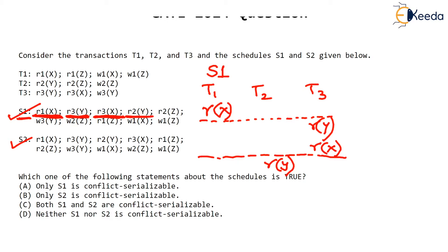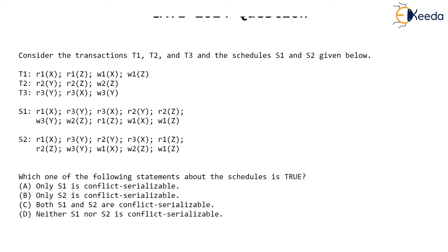I will not write the entire S1 schedule in tabular form here — we will do that while solving the problem. Similarly, S2 is another schedule comprising the same transactions T1, T2, T3. The question asks: which of the following statements about the schedules is true? Only S1 is conflict serializable; only S2 is conflict serializable; both are conflict serializable; or neither is conflict serializable.